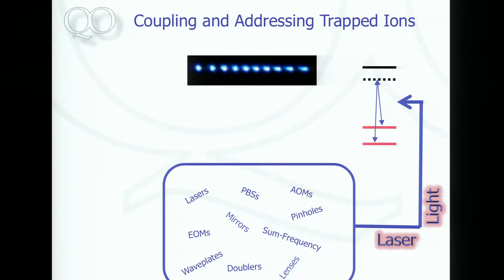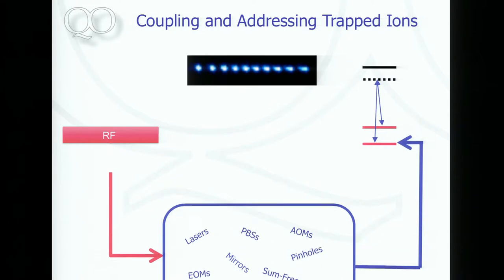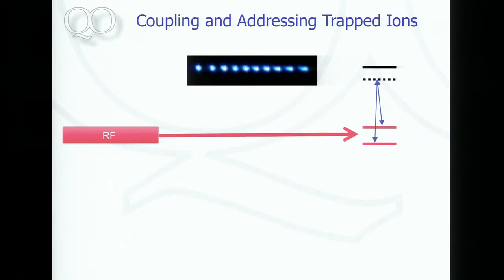If you take a careful look at this experimental table, you realize that almost all of these elements that actively do something are controlled by radio frequency sources. These radio frequency sources typically act at, or can act at, this transition frequency. Using this magic thing, you can get rid of all the laser stuff and drive your qubits directly using radio frequency sources.